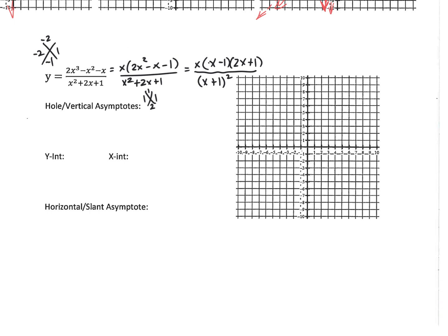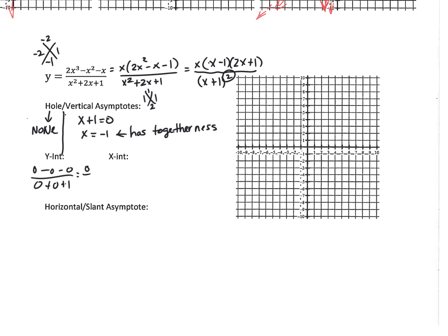Vertical asymptotes come from the denominator — that would be the factor (x plus 1). Setting it equal to 0 gives x equals negative 1, and since the multiplicity is even — (x plus 1) squared — there is togetherness. For the y-intercept, plugging in 0 gives 0 over 1, which is 0. So the y-intercept is at (0, 0). For x-intercepts, from the numerator factors: x equals 0, x equals 1, and x equals negative 1/2.